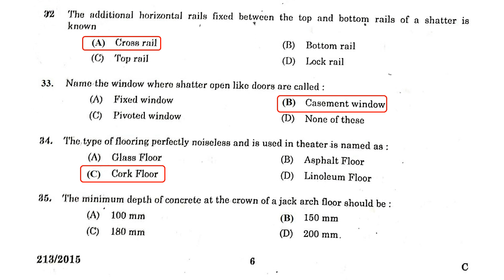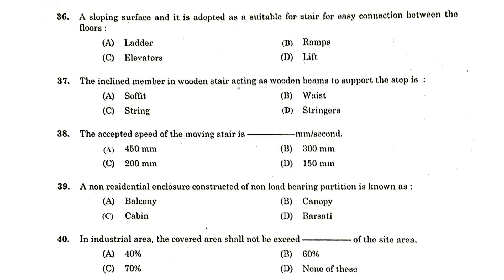The minimum depth of concrete at the crown of a jack arch floor should be 150 mm. A sloping surface adopted as a suitable connection between floors is known as a ramp. The inclined member in a wooden stair acting as a wooden beam to support the steps is known as a stringer.